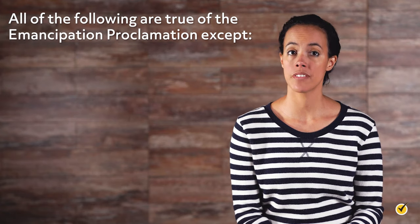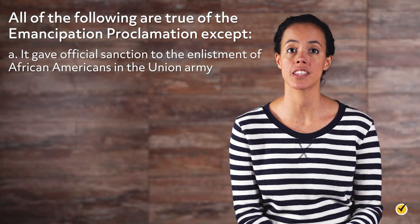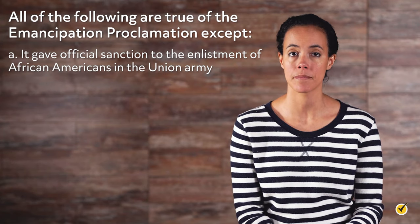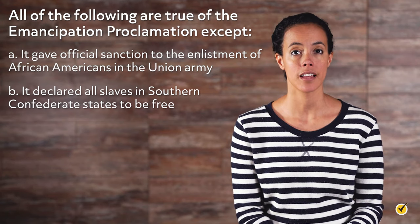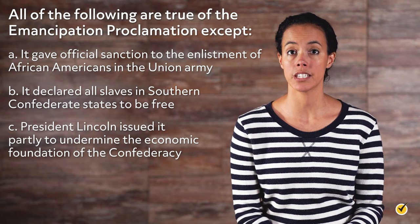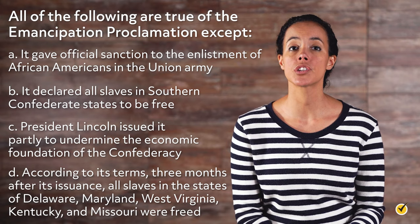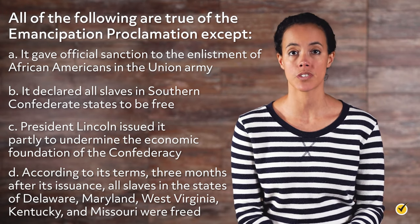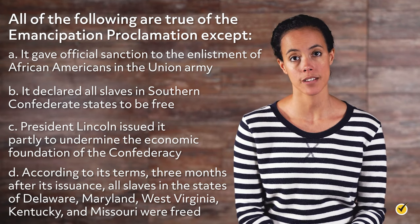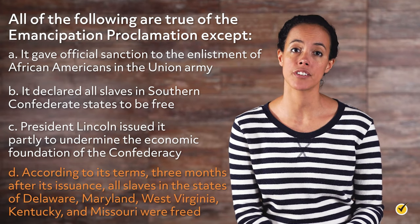Review question: All of the following are true of the Emancipation Proclamation except D — according to its terms, three months after its issuance, all slaves in the states of Delaware, Maryland, West Virginia, Kentucky, and Missouri were freed. The answer is D. Slaves in all of the Southern Confederate states were freed, not the border slave-holding states. Thanks for watching. Happy studying.